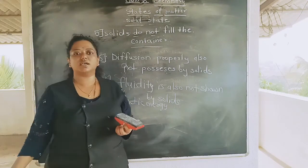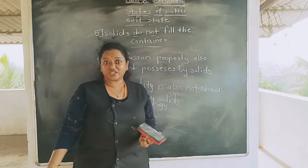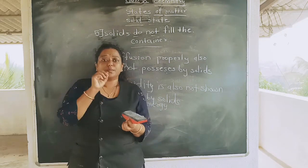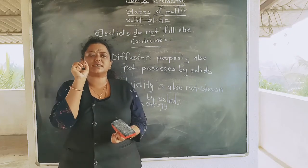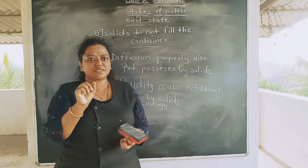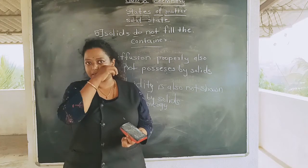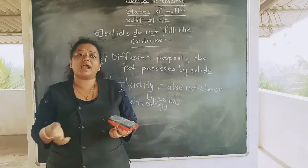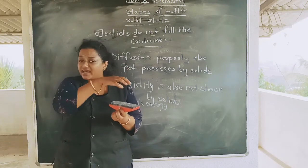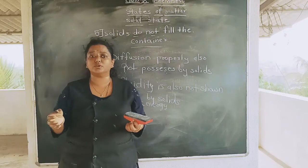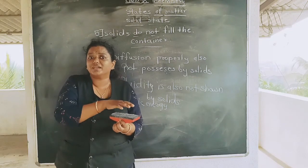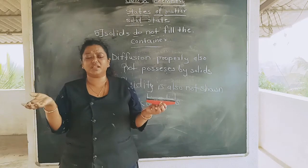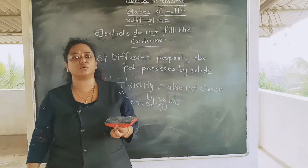Another interesting example — sponge is a solid, but it shows compressibility. Why? If you look at the structure of a sponge, it has small, small gaps, and those gaps contain a lot of air. When we compress the sponge, the air escapes from those pores, and because of that, the particles of the sponge move down. But when we remove the force, the sponge regains its original shape.